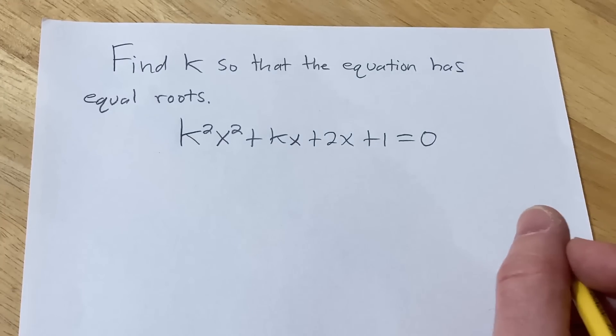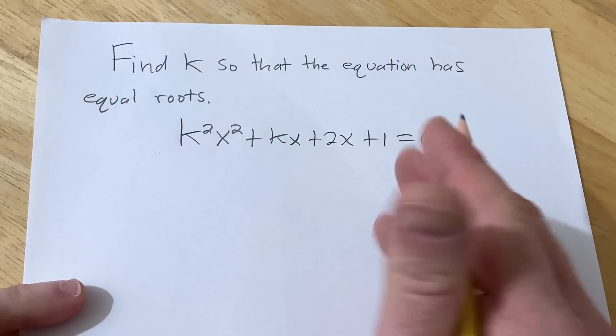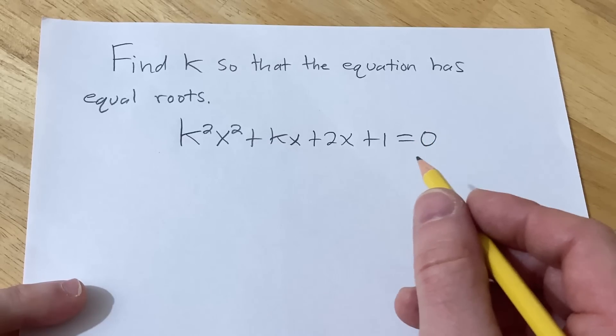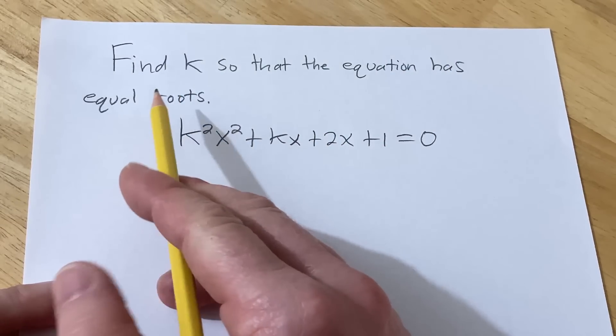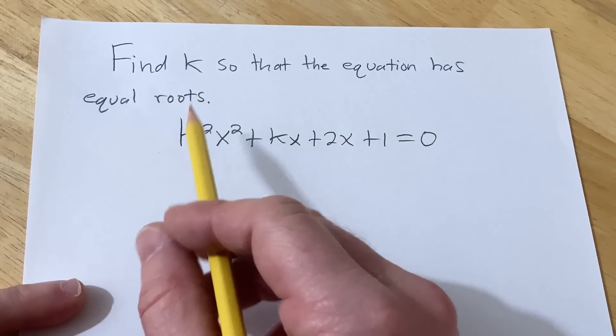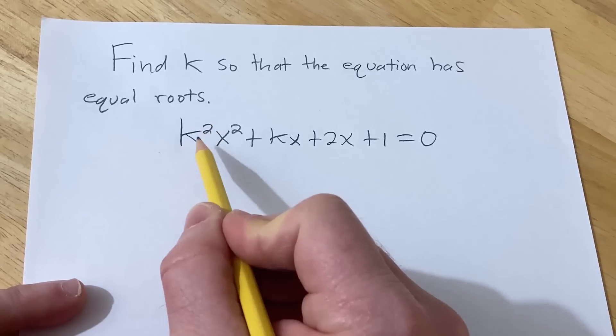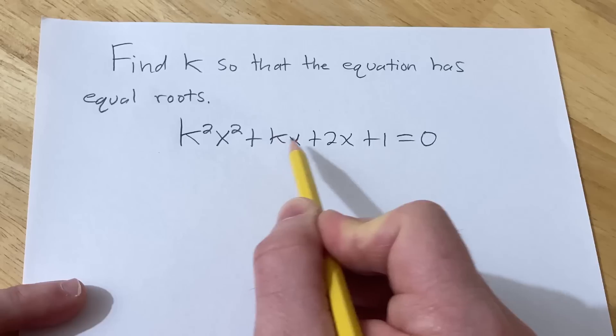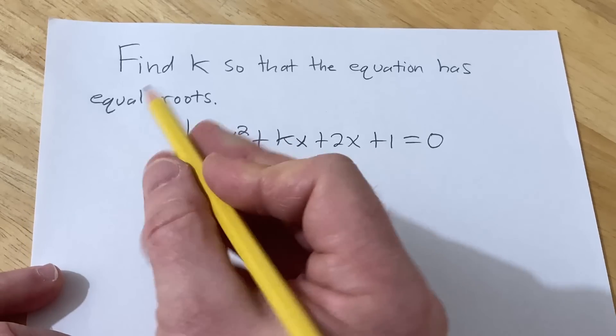So this is the problem that we're going to do. And it's not a really difficult problem, but it's also not a really standard problem. A lot of people haven't seen problems like this. So I thought it might be fun to work through it. The question is to find k so that the equation has equal roots. And this is a quadratic equation in x. So we have k squared x squared plus kx plus 2x plus 1 equals 0. Let's go ahead and work through it.